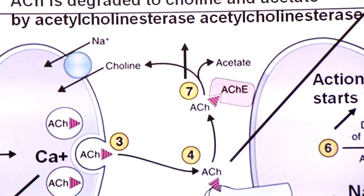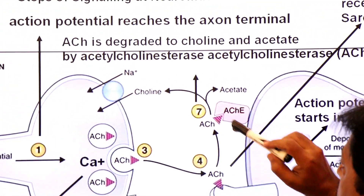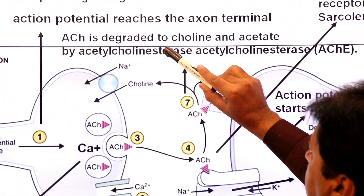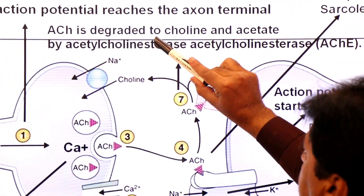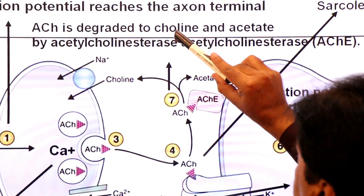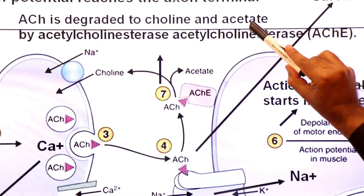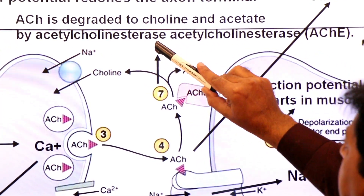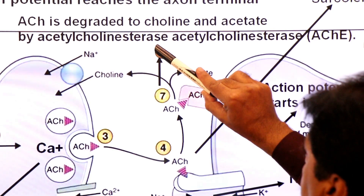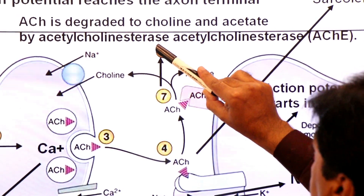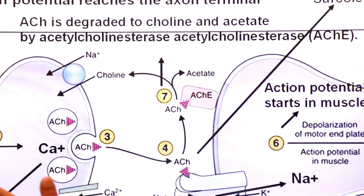Step 7: acetylcholine is degraded — broken down into choline and acetate — by the help of an enzyme called acetylcholinesterase.